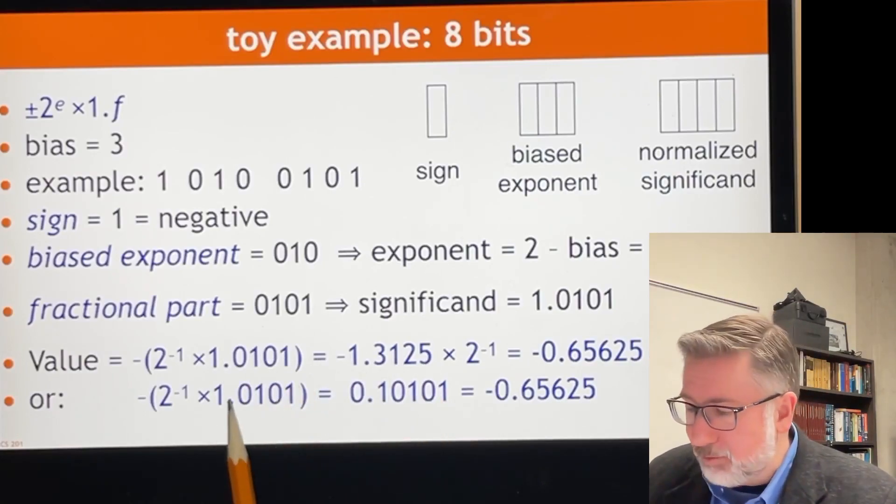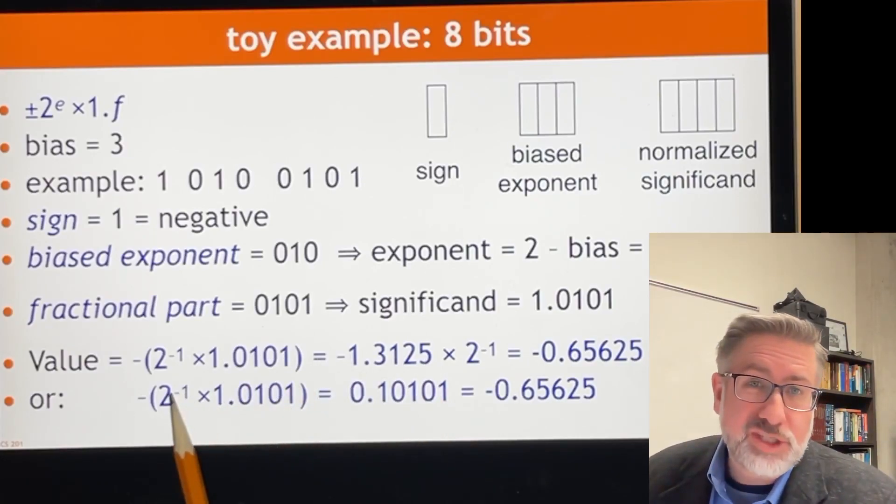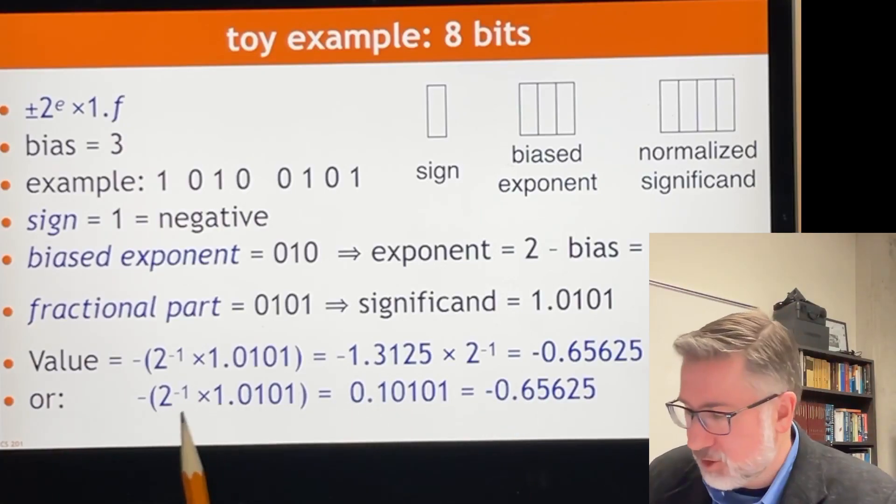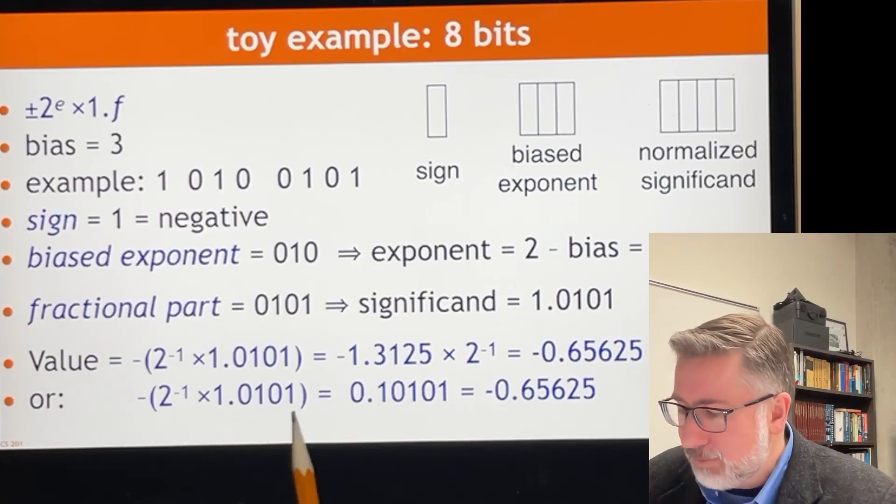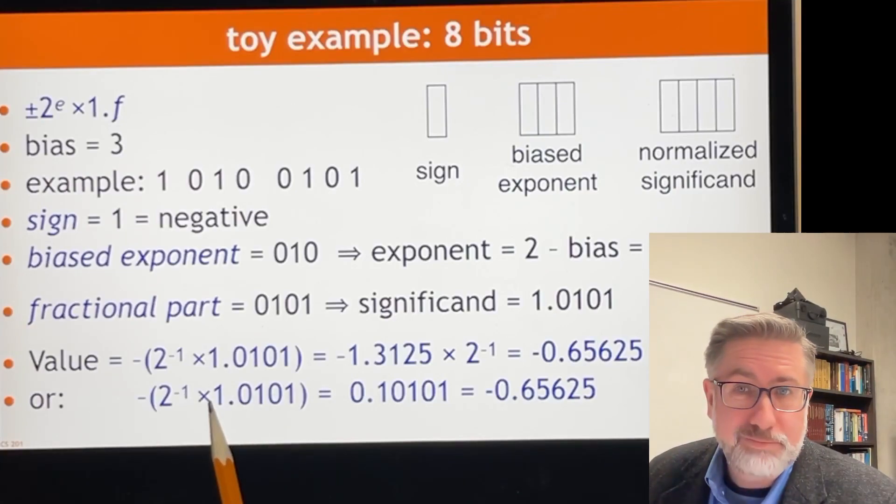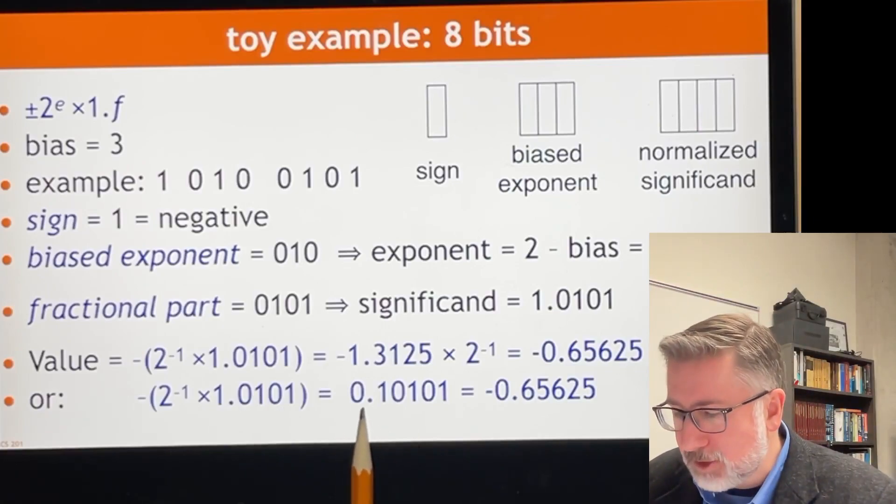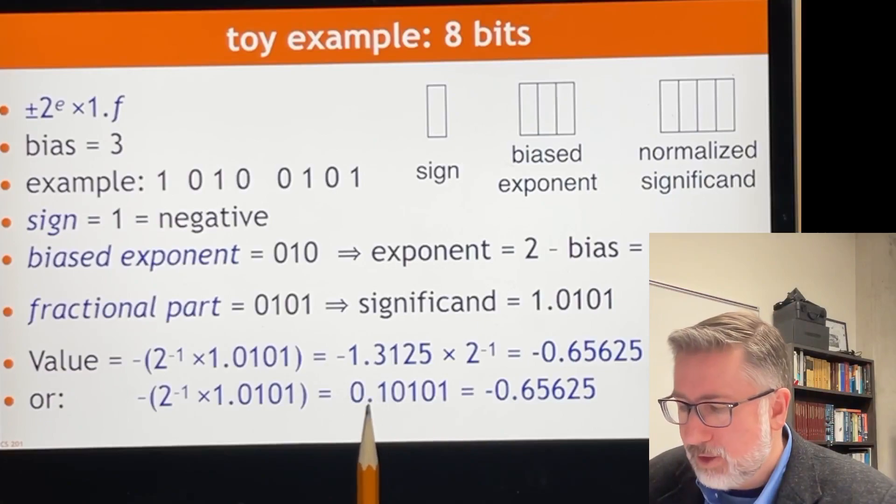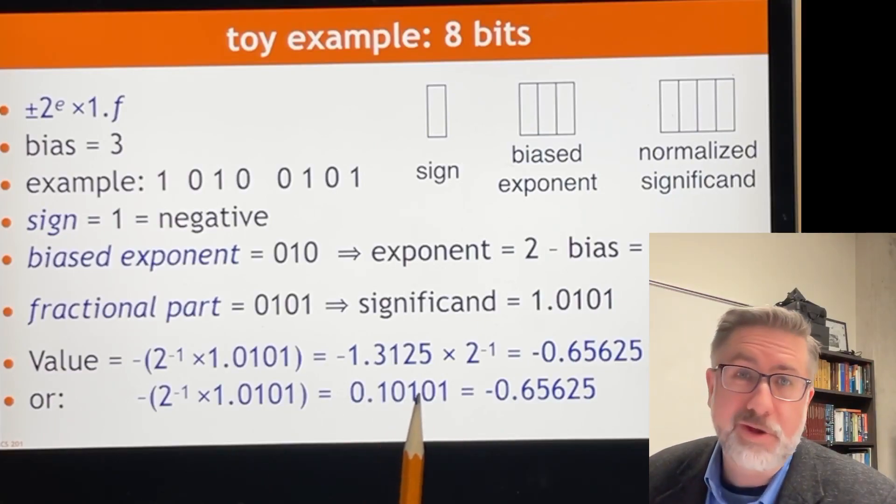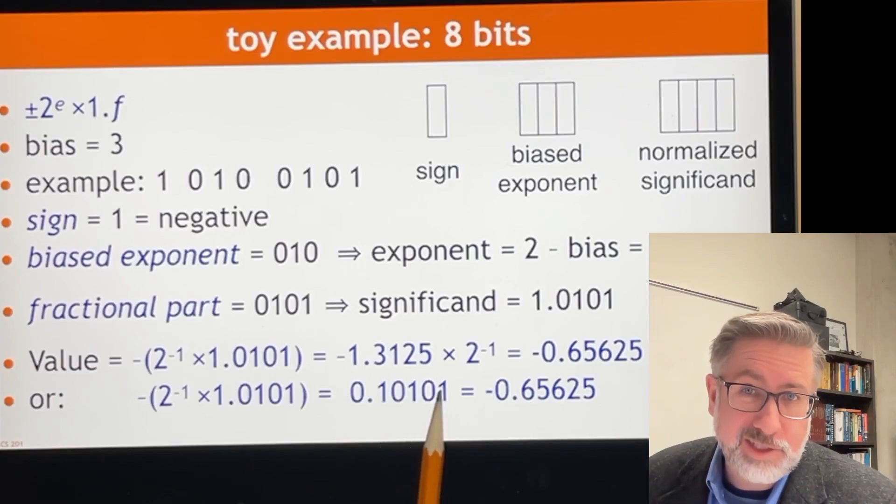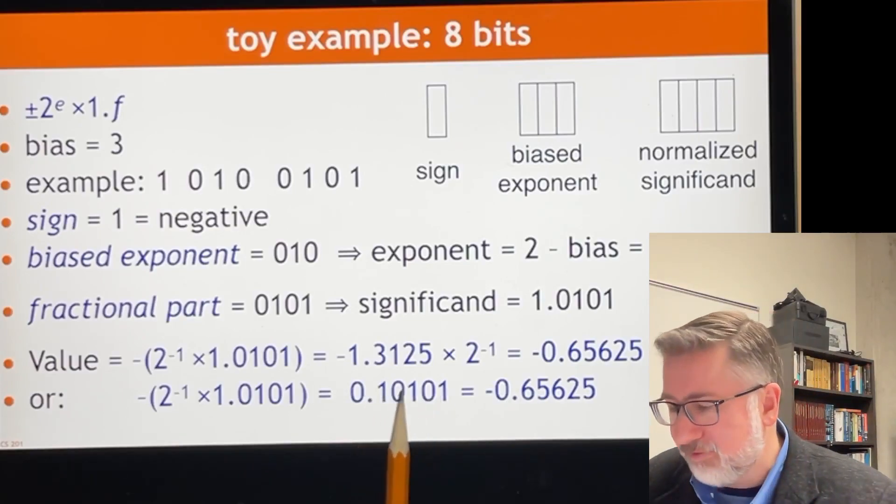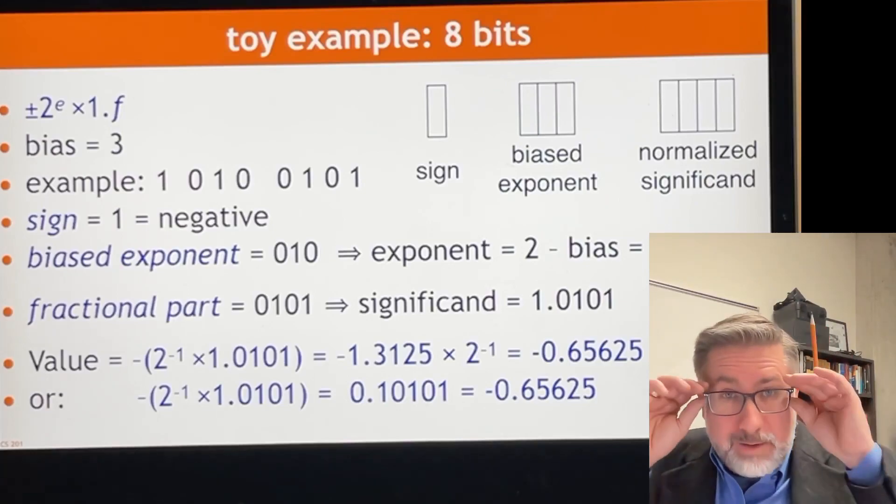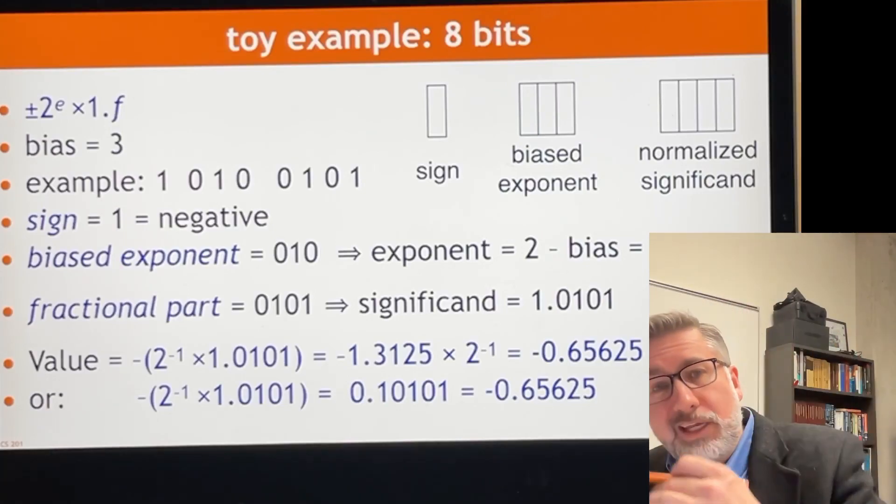Or we can take the number and use the exponent to put it in the right place first, and then convert it, right? So we say 2 to the negative 1 means we shift this whole thing to the right by 1. And we get 0.10101, which is, this should be negative, which is a half plus, not a quarter, but an eighth, plus, not a sixteenth, plus a 32nd. A half plus an eighth plus a 32nd, if you do the math, gives you that number as well. So that's how we represent floating point numbers in base 2.